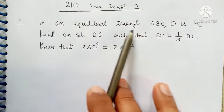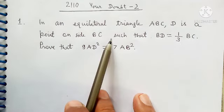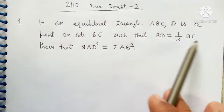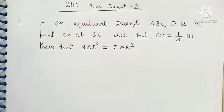In an equilateral triangle ABC, D is a point on side BC such that BD is equal to one-third BC. Prove that 9AD square is equal to 7AB square.